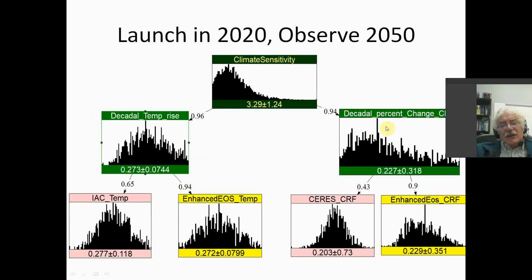The correlation between the climate sensitivity and the proxy variable decadal temperature rise is 0.96, a fairly strong correlation. Over here, it's 0.94. That means after 30 years, these proxies are pretty good in terms of measuring climate sensitivity, even taking account of natural variability.